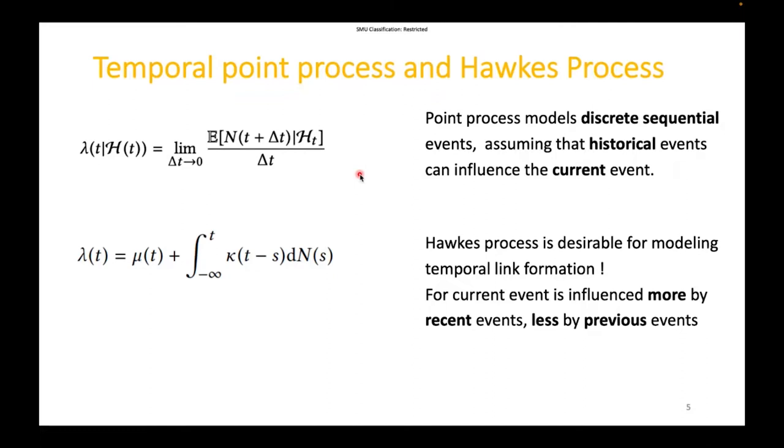Hawkes process is a typical temporal point process with the conditional intensity function defined as follows, where mu t is the base intensity of a particular event showing the spontaneous event arrived at time t, and kappa is the kernel function that models the time decay effect of past history on the current event, which is usually in the form of an exponential function. The conditional intensity function of Hawkes process shows that the occurrence of current events does not only depend on the event of last time state, but is also influenced by the historical events with time decay effect.